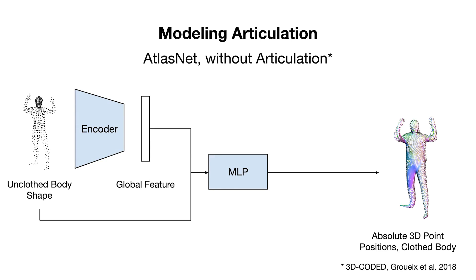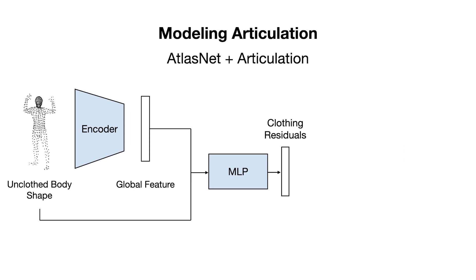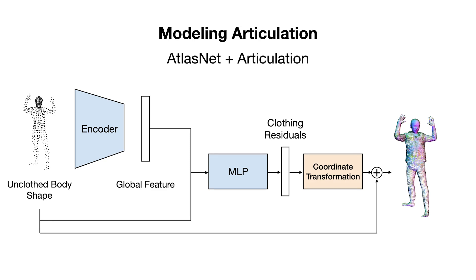This is achieved by a carefully designed architecture that addresses the limitations of existing methods that use surface elements. One of the most popular methods of this category, AtlasNet, predicts the absolute location of points in space without considering articulation. Articulation is critical for modeling clothing on humans. To address this, we predict residual clothing differences from the body in a set of local coordinate systems and then apply articulations using the known body transformations. By applying this technique to AtlasNet, the result is already greatly improved but still lacks sharp details — note the missing boundary from the blazer.